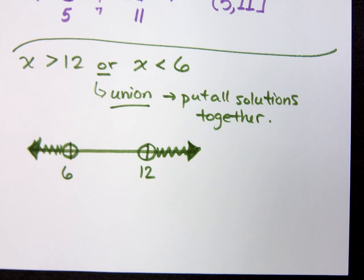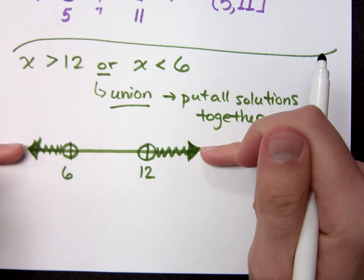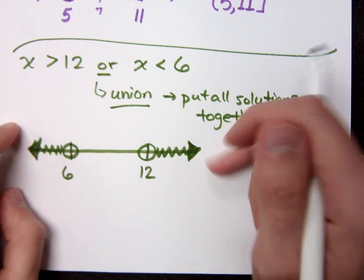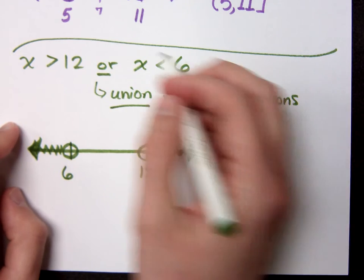I'm just asking you guys to take the solutions for each of these, put it together, and describe what you see. Well, this is my graph to describe what I see. So anything that's less than 6 or greater than 12 would satisfy this.